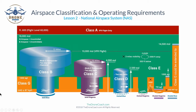The first larger shelf of Class B airspace can begin at roughly 1,000 to 2,000 feet MSL and extend outward about 10 miles from the center of the airport. The second shelf can begin anywhere between 3,500 and 5,000 feet MSL, extending up to a ceiling of approximately 10,000 feet MSL and outward about 15 miles from the center.